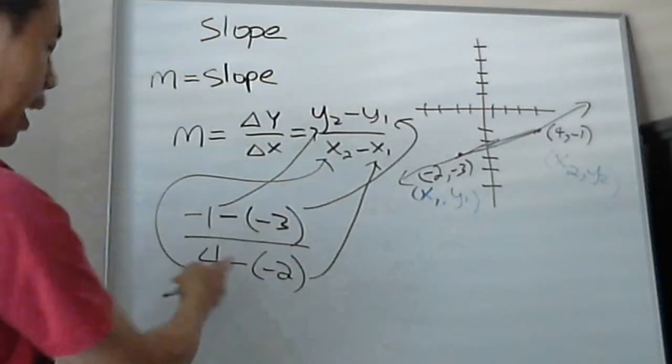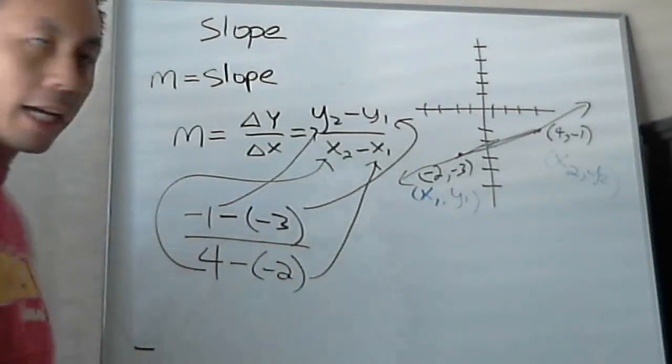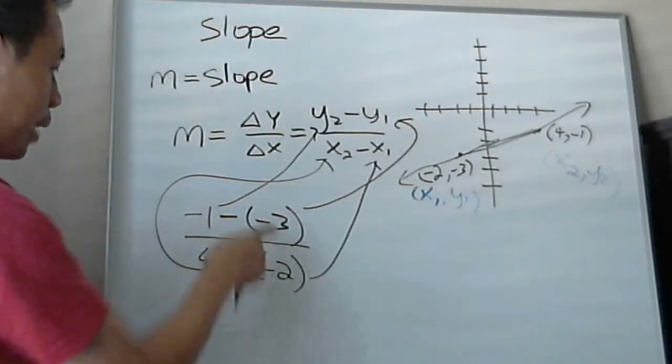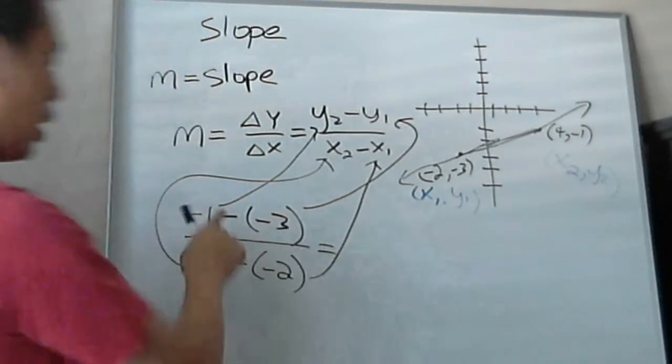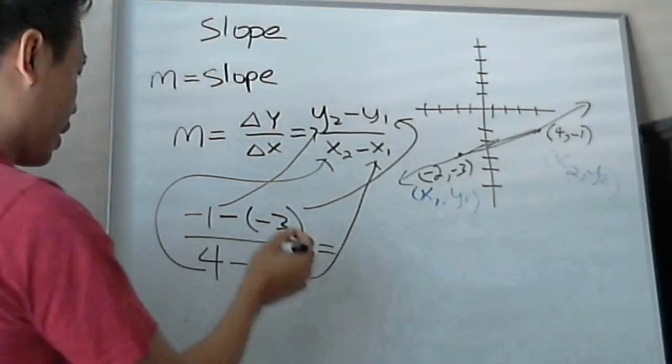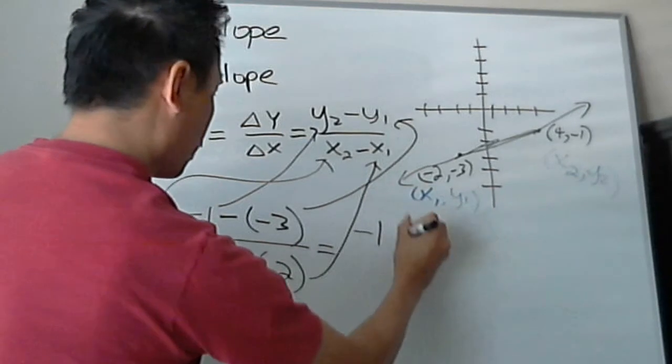So now I have this. I put it in this equation here. So I have negative 1 minus negative 3. And if you watch my other video, minus minus is plus plus, right? So it's really negative 1 plus 3.